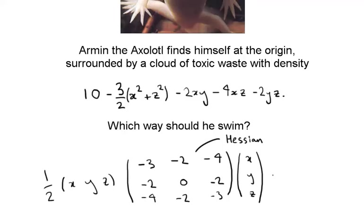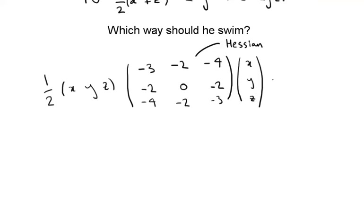Now if we want to find out what direction he should swim in, it should be the direction of greatest decrease of this quadratic function. So that is to say, if we found the eigenvectors of this matrix, then he should be swimming in the direction of the eigenvector with the biggest negative eigenvalue.